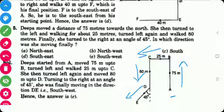In which direction was she moving finally? So which is this direction? West and south. So he is moving finally in the southwest direction.